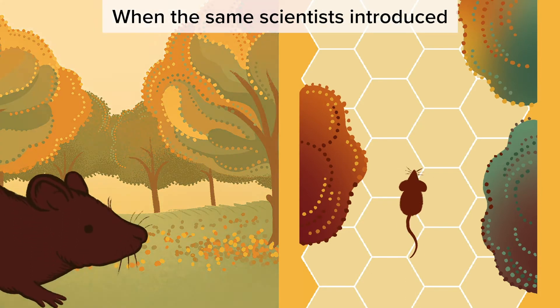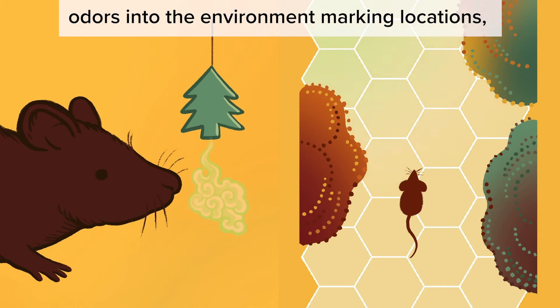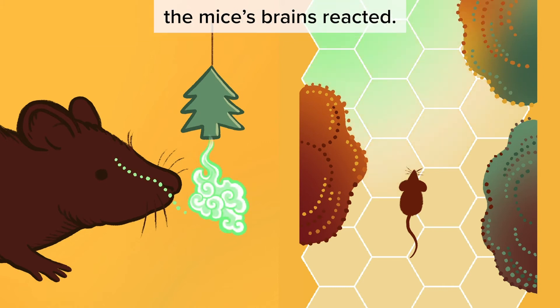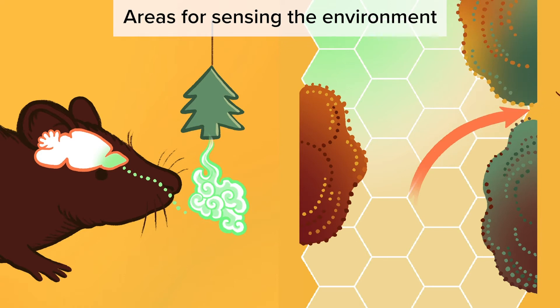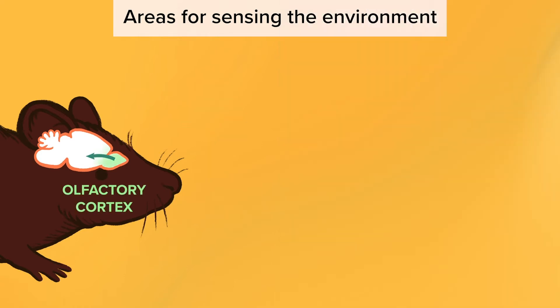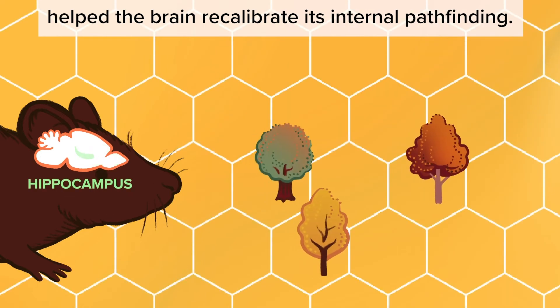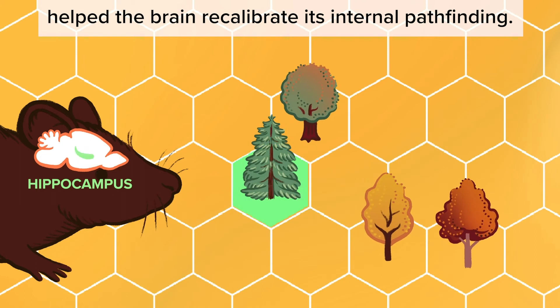When the same scientist introduced odors into the environment marking locations, the mice's brains reacted. Areas for sensing the environment helped the brain recalibrate its internal pathfinding.